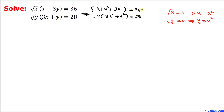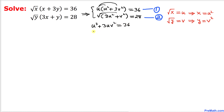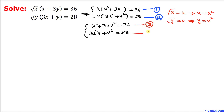Let's call those equation number 1 and equation number 2. Now in the next step, let's distribute and multiply. The system of equations becomes u cubed plus 3uv squared equals 36, and the second equation becomes 3u squared v plus v cubed equals 28. Let's call these equation number 3 and equation number 4.